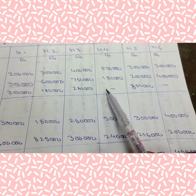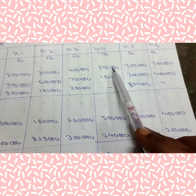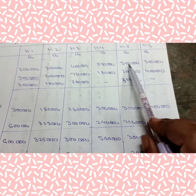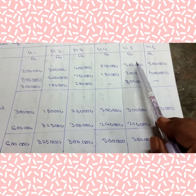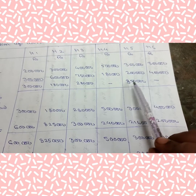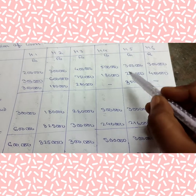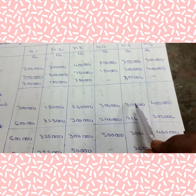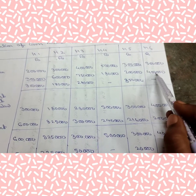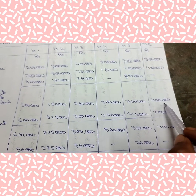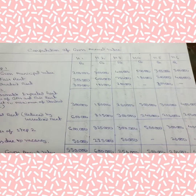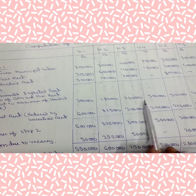House 4 has no standard rent, so we simply take the higher of GMV and fair rent — GMV is higher, so that is the reasonable expected rent. House 5: higher of GMV and fair rent is 3 lakhs, and it does not exceed standard rent, so reasonable expected rent is 3 lakhs. House 6 also has no standard rent, so the higher of GMV and fair rent is taken as reasonable expected rent.